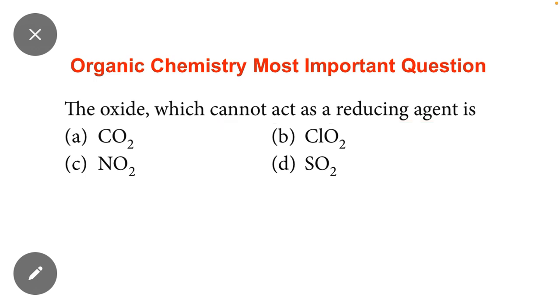A reducing agent is a species that reduces others and oxidizes itself. Oxidizing itself means it can donate electrons. So here the question is which cannot act as a reducing agent—we have to identify that species which cannot donate electrons, which cannot oxidize itself.